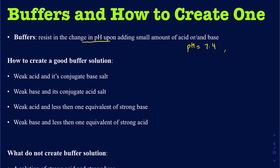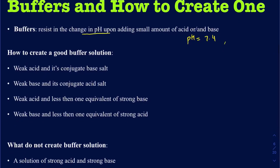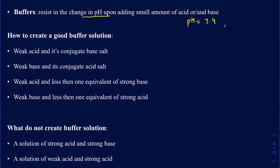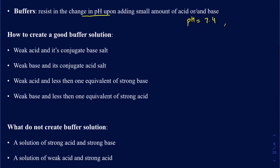What really makes a good buffer system? To have a good buffer system, you have to have either a weak acid and its conjugate base salt, or you can go the other way where you start out with a weak base and have its conjugate acid salt.